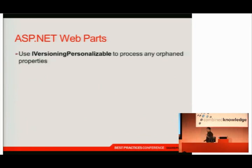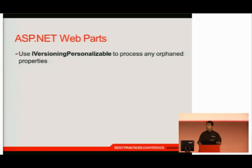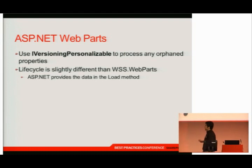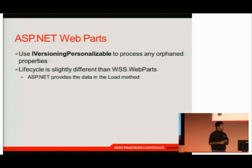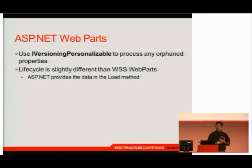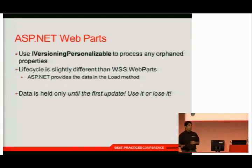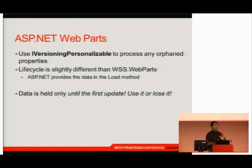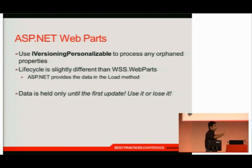For ASP.NET web parts it's a different process. ASP.NET has a concept known as iVersioning Personalizable — an interface specifically designed to let you handle orphaned properties. A lot of people don't know about this. Our hook is nice because we have an opportunity to work with the data in the load method. Unlike WSS web parts where the data was pushed into another property and always persisted, ASP.NET says we're going to give it to you one time and one time only — use it or lose it. If you don't save it and that web part is updated, goodbye — we're not going to carry that baggage around.